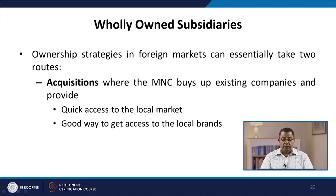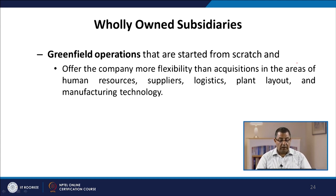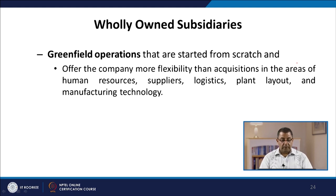Ownership strategies in foreign markets can take two routes. One is acquisition, where MNCs buy up existing companies to gain quick access to the local market and local brands. The other is greenfield operations, which are started from scratch and offer more flexibility than acquisitions in areas of human resources, suppliers, logistics, plant layout, manufacturing technology, and culture.